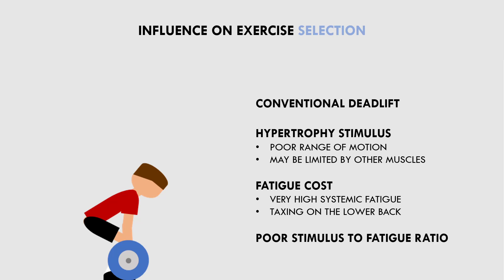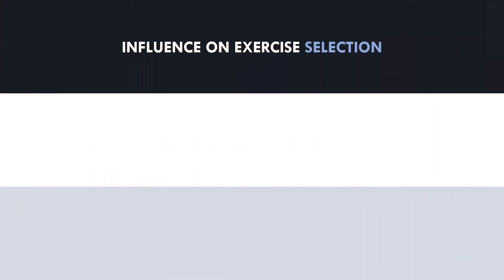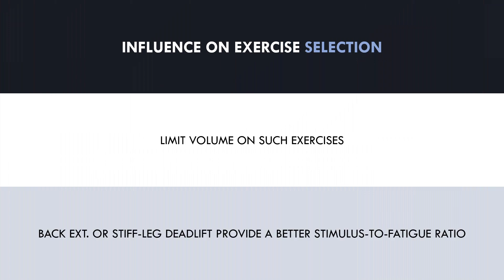This doesn't mean that trainees can never perform this lift; it just means that trainees should be careful not to perform too much volume with a conventional deadlift if their goal is to maximize muscle hypertrophy. Instead, trainees may want to select an exercise with a more favorable stimulus to fatigue ratio. Something like a back extension or a stiff leg deadlift probably provides a better hypertrophic stimulus to the glutes and hamstrings and also induces much less fatigue, allowing trainees to perform more volume or get a better stimulus with the same amount of volume.